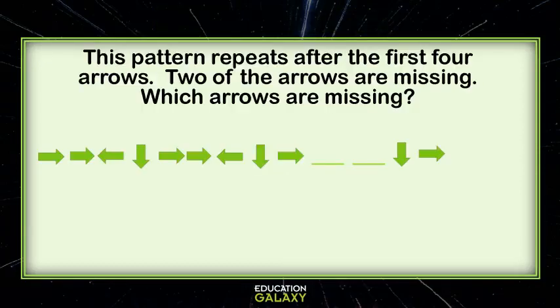Here's another pattern question. It says, this pattern repeats after the first four arrows. Two of the arrows are missing. Which two are missing? All right, so let's find the pattern.